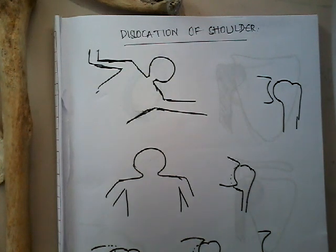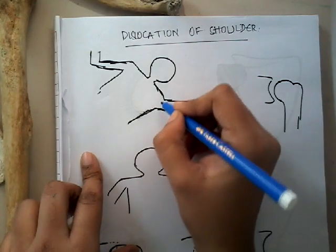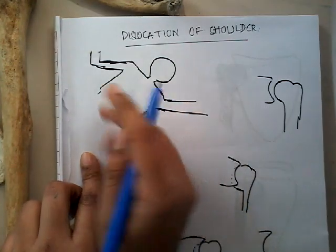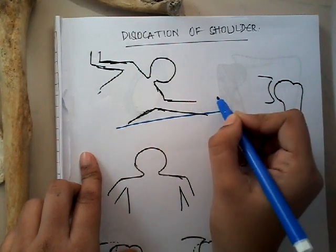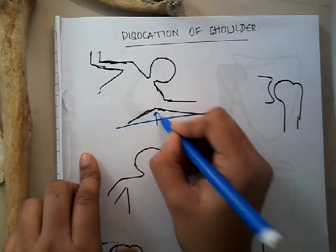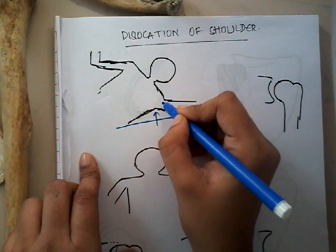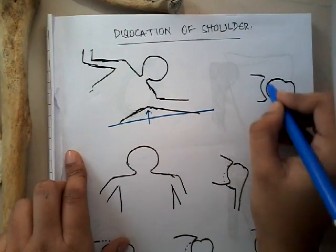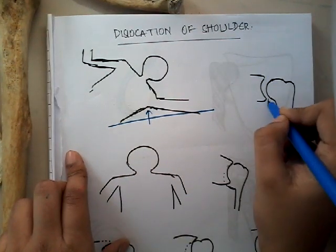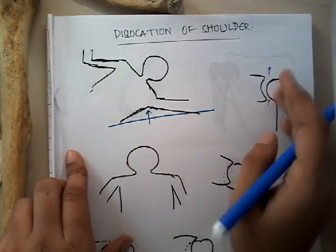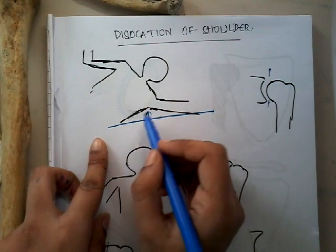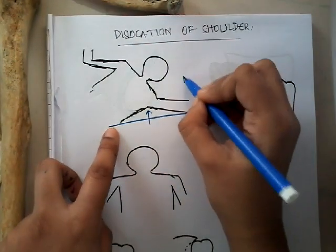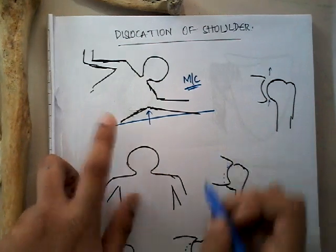Dislocation of the shoulder is mainly due to injury. If a person falls on an outstretched, abducted hand, the head of the humerus may shift upward — this can result in anterior or posterior dislocation. Falling on the outstretched hand is the most common mechanism of trauma.